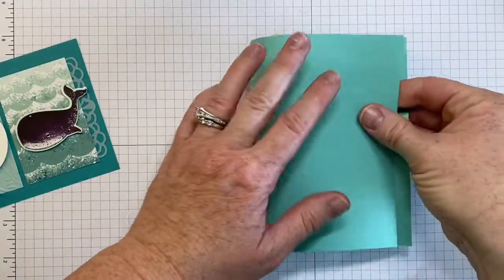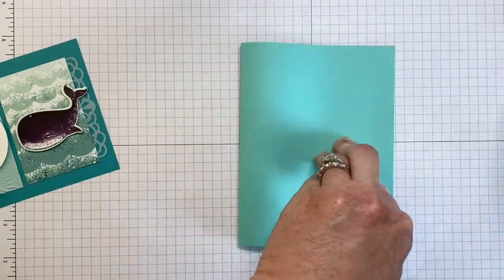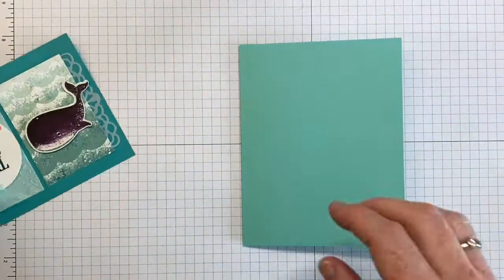Next, we'll bring in our card base and we'll fold and line up the edges and then get a quick press with our bone folder.